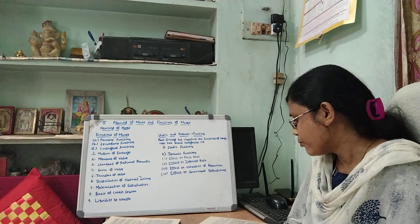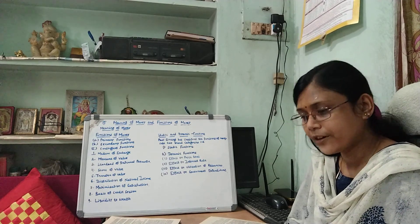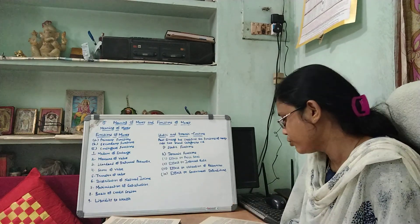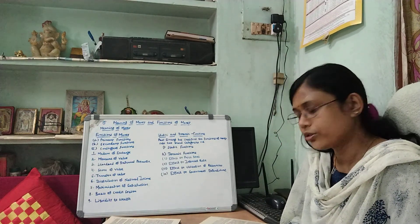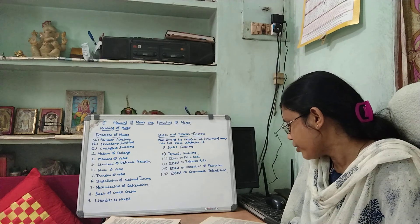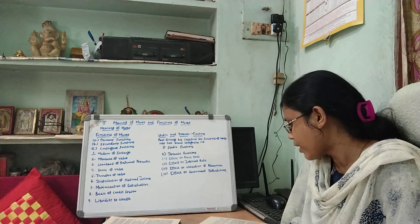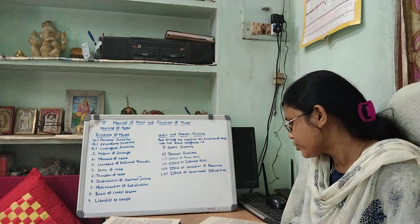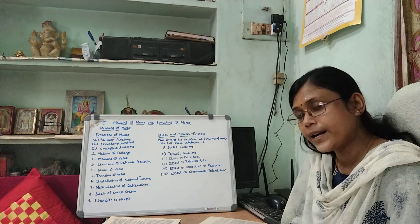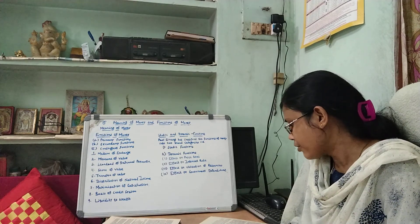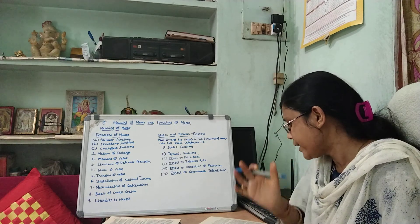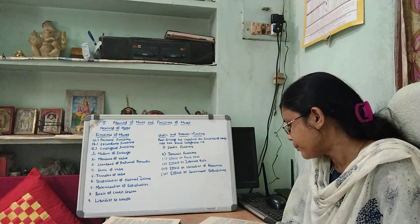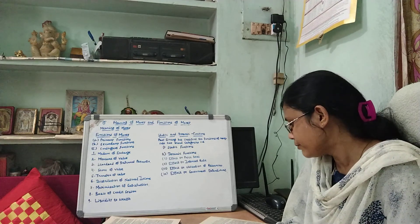What is money? Money has been defined differently by different economists. Some definitions are broad, others are narrow. For example, Walker's functional definition states: money is what money does. According to this definition, we can include all those things in money which perform the functions of money.